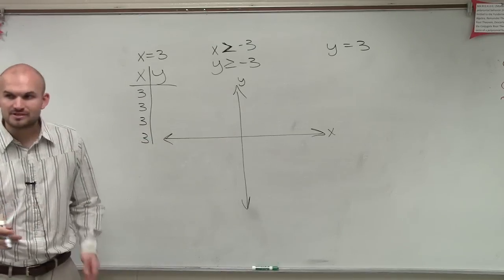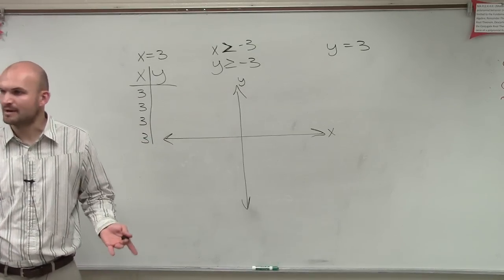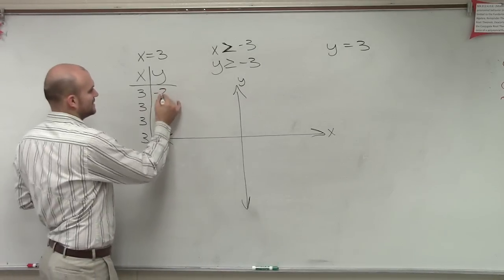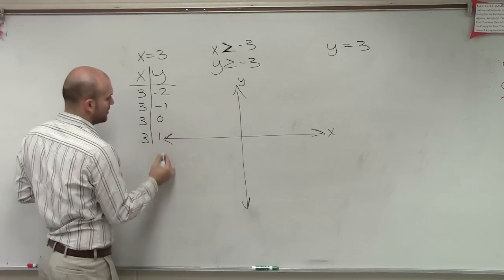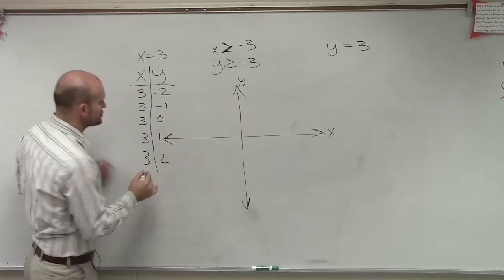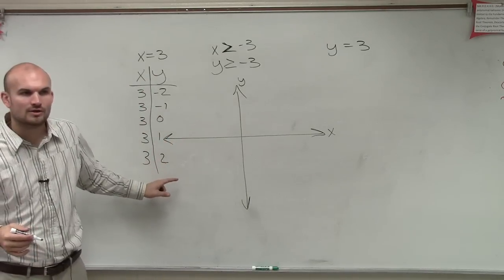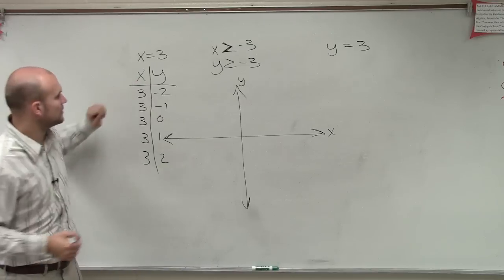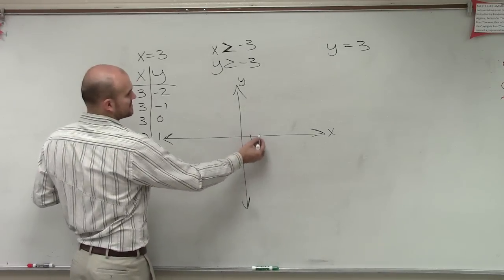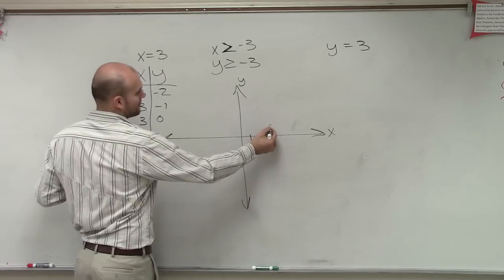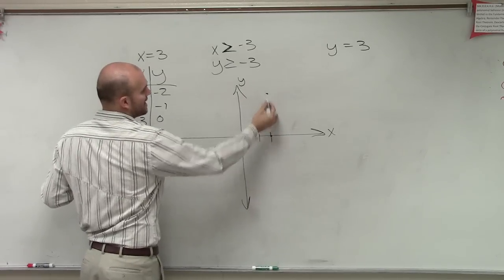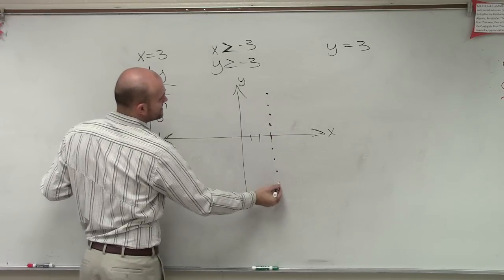But my y-values can be, really, there's no constraint on my y-values. So I could do like negative 2, negative 1, 0, 1, 2. There's no constraint on what my y-values are or can be. So therefore, for this vertical line, x always equals 3. So it doesn't matter what the y-value is, x always equals 3. Now I'm going to get to what we're going to do for inequality.